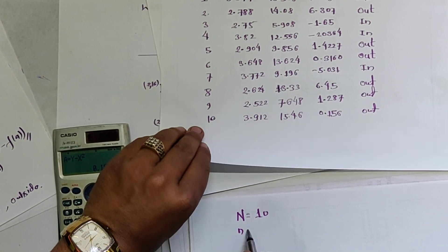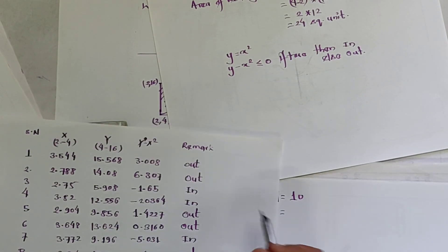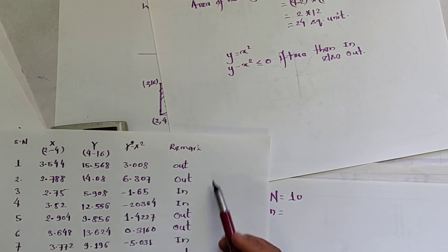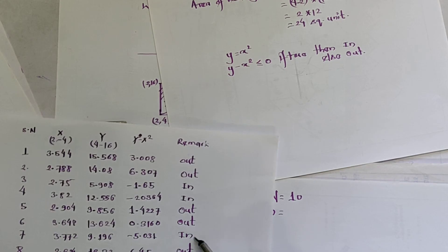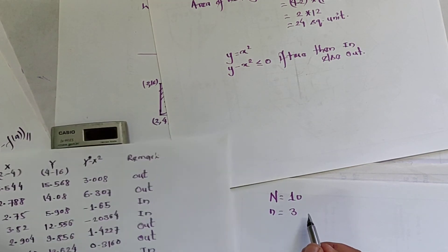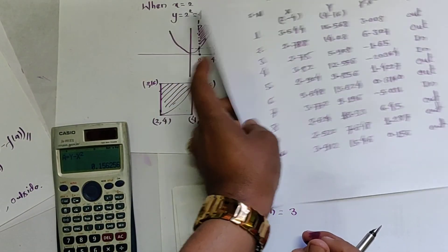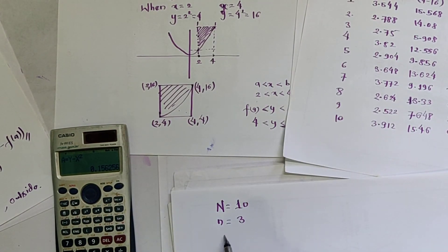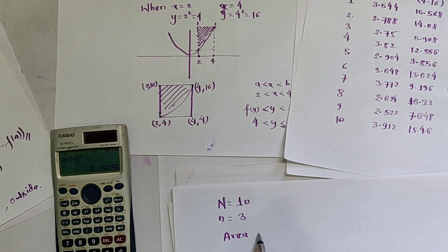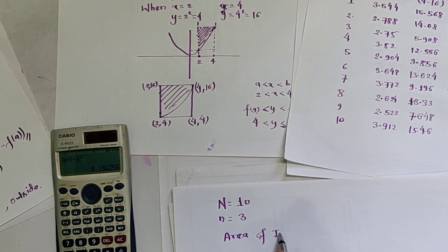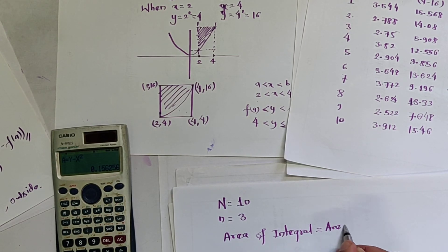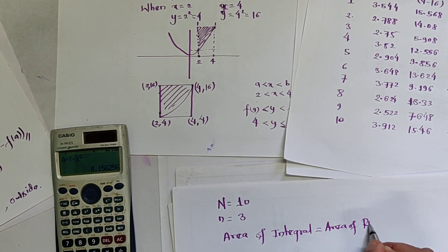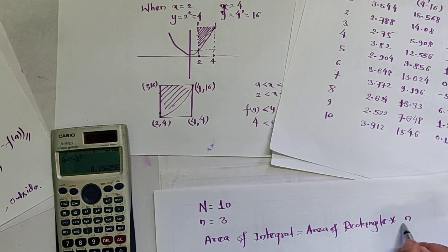The number of points inside the region is 3 — iterations 3, 4, and 7 were inside. So we can use the formula: the area of the integral equals the area of the rectangle multiplied by (number of points inside / total points), that is, area of rectangle × (n_in / n).